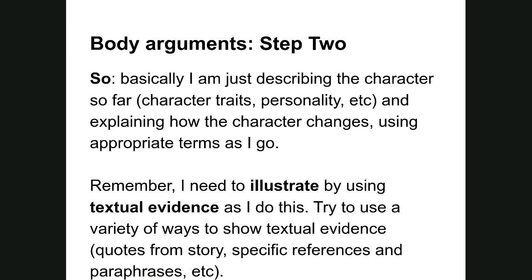Basically in step two I'm identifying who the protagonist is and then defining that protagonist in terms of roundness or flatness and dynamic or static quality. I can add other details if I choose, but I must tackle round/flat and dynamic/static. I need to illustrate at all times with textual evidence. Variety is the spice of life — in terms of writing, use a variety of ways to provide textual evidence: quoting, paraphrasing, putting things in your own words, or quickly summarizing plot points.